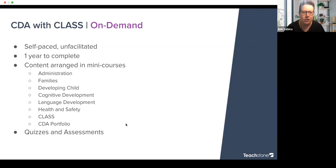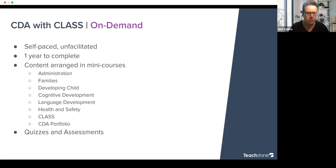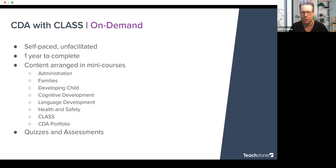The on-demand CDA with CLASS is self-paced and not facilitated. You have one year to complete it — you can finish in three or four months, eight or nine months, or take the full year. It's arranged in mini courses and you can bounce around. You could work on administration one day and language development the next. You don't have to go in sequential order, and there are quizzes and assessments throughout.